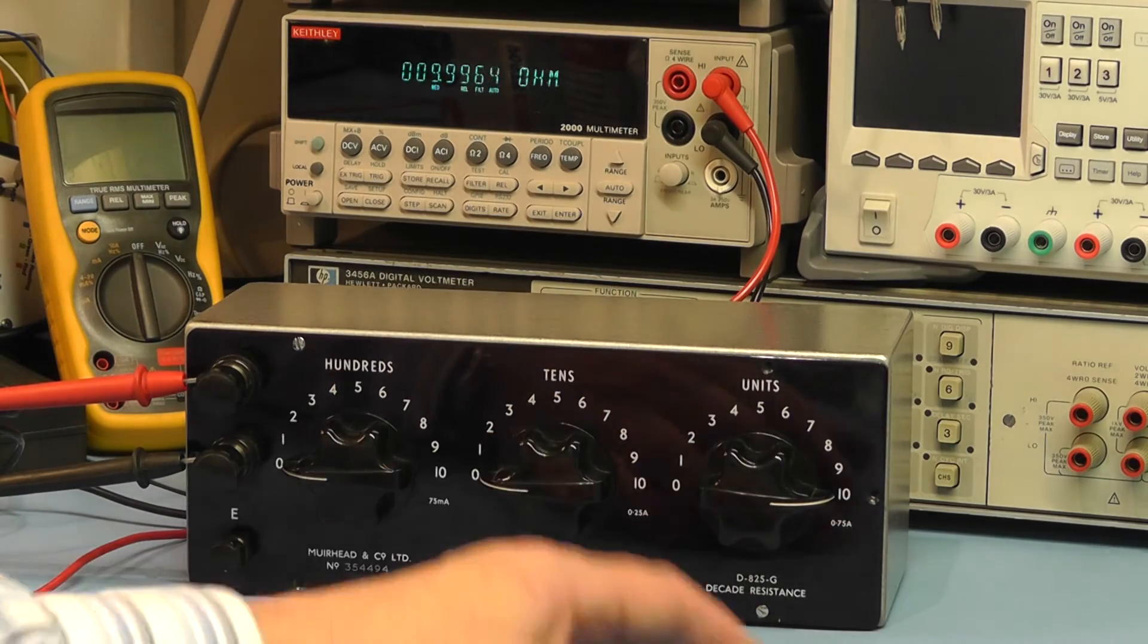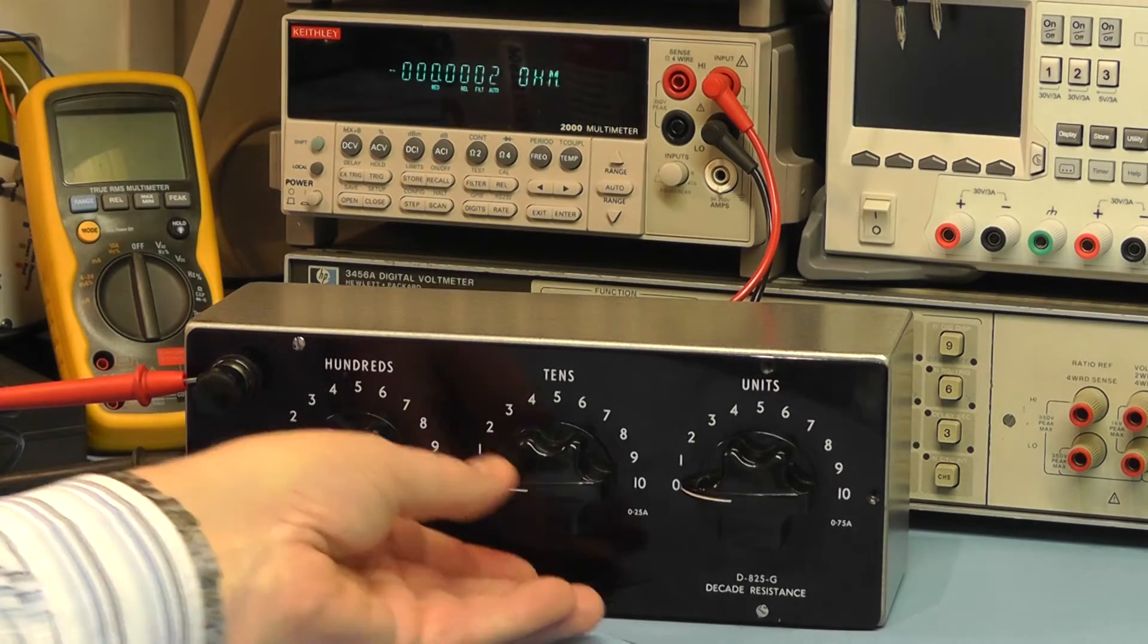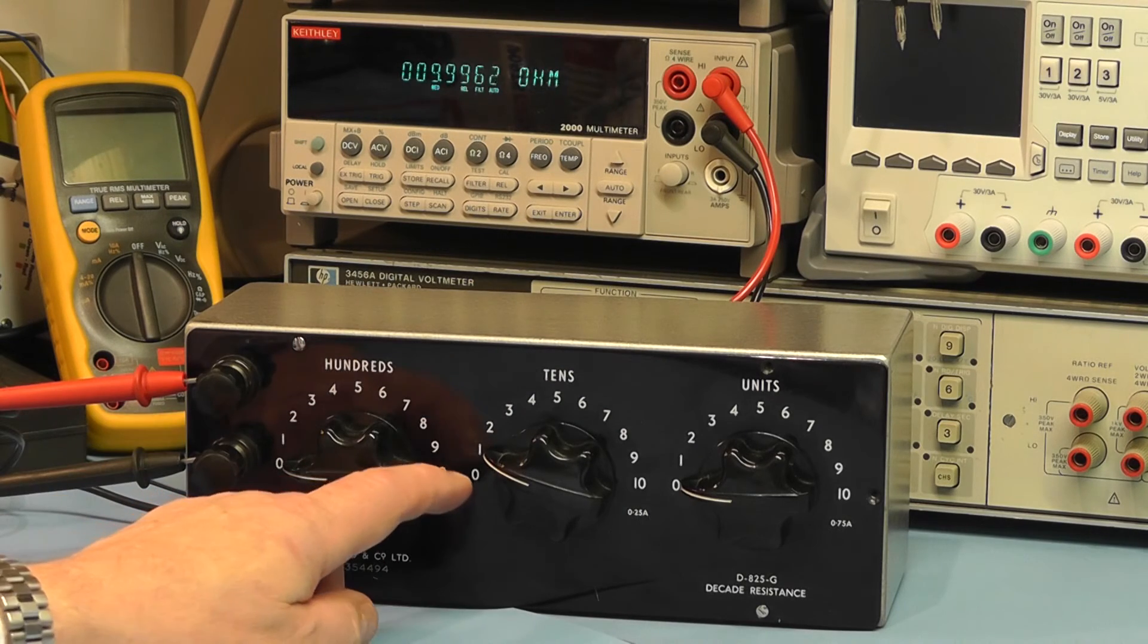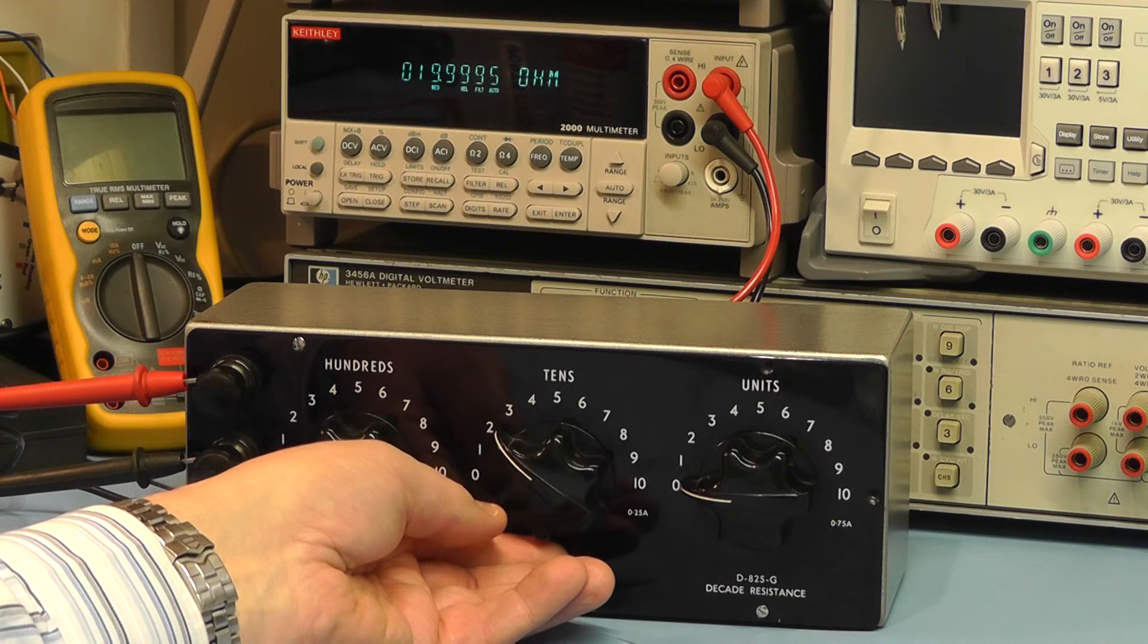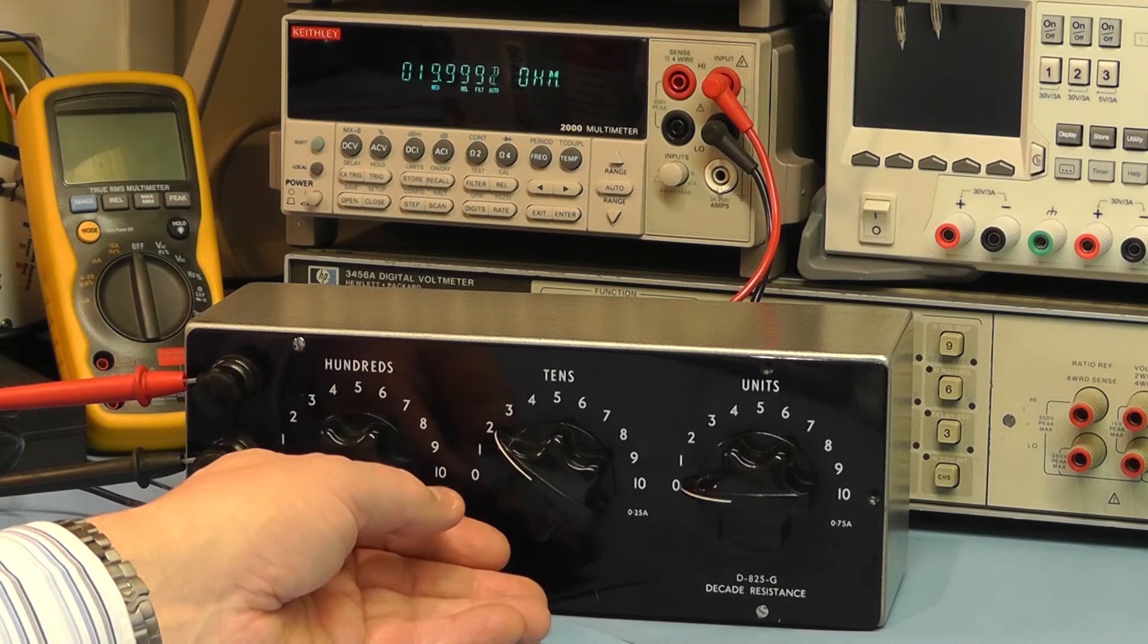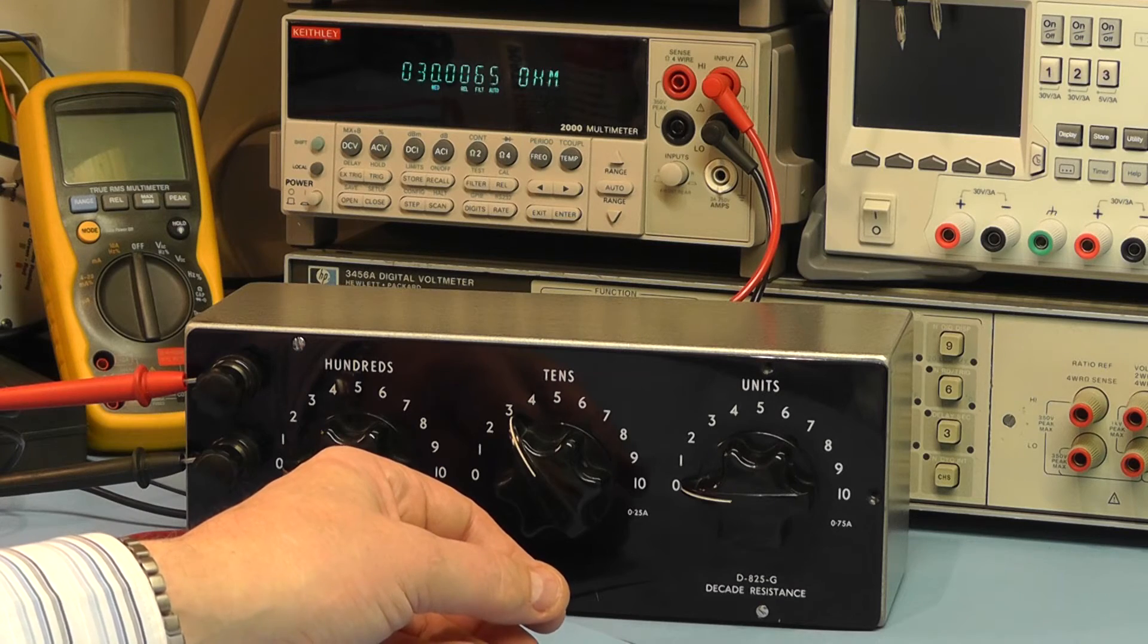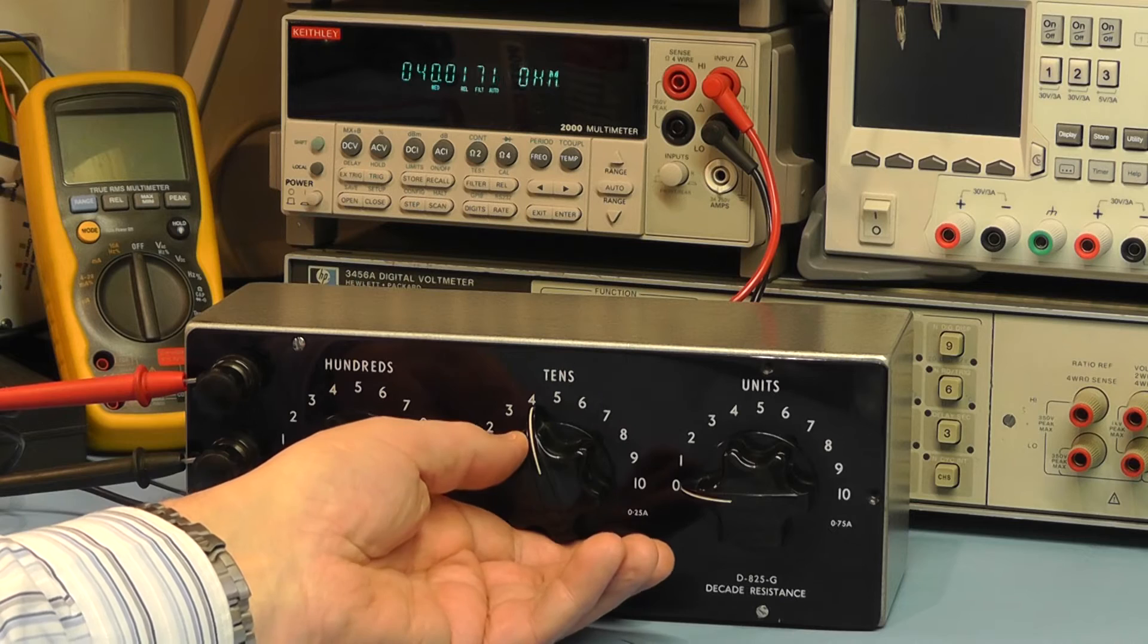So the unit reading seems to be fairly accurate. We'll check the tens. On the ten it's reading 9.996, on the twenty it's reading nineteen point, well it's splitting between the two 19.9996, on the thirty it's reading exactly 30 there, on the forties is spot on.